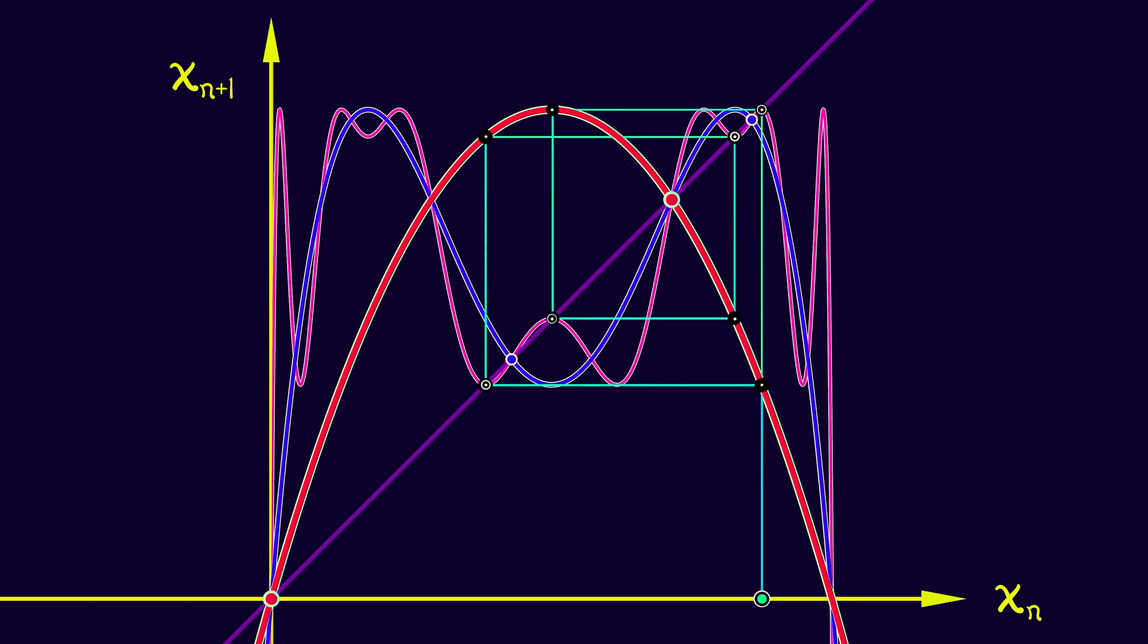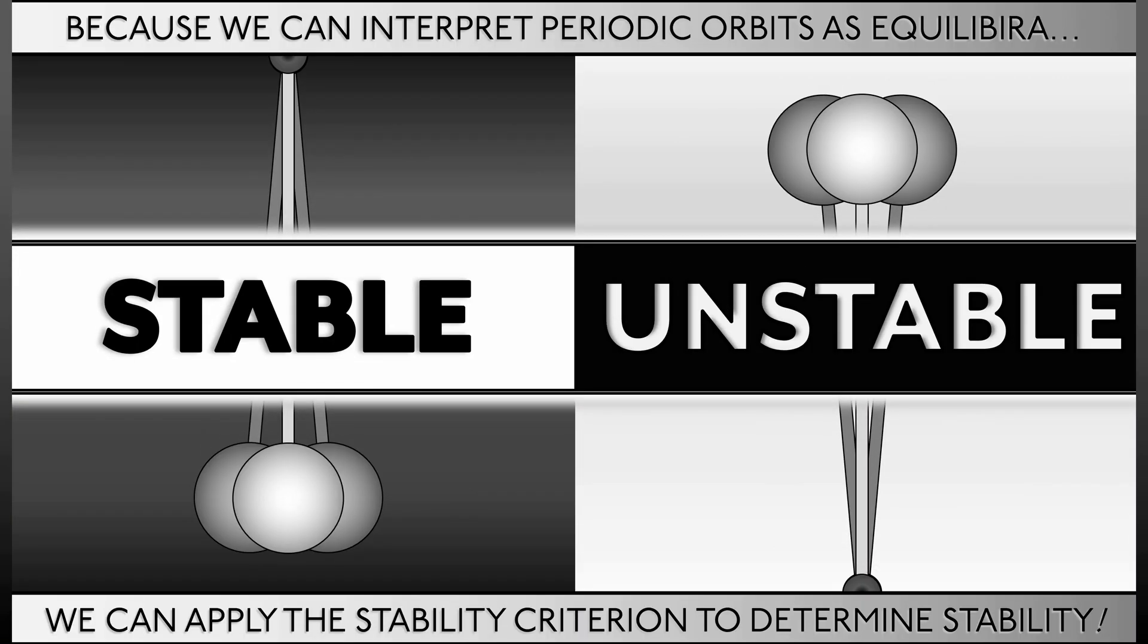Aha! It passes precisely through those points and at an interesting sort of slope. All of this goes to suggest that because we can interpret the periodic orbits as equilibria of these composed systems, we can apply the stability criterion to that composition in order to determine the stability of periodic orbits. And that's a really helpful idea.